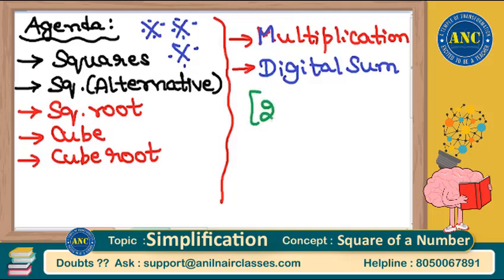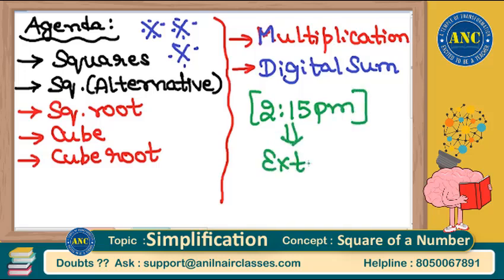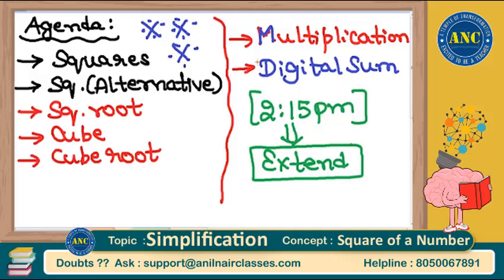The target is to complete everything in the next two and a half hours till 2:15 pm. If required, we might extend the class. It is completely up to you whether to listen to this class or ignore it — I do not force any student. Interested will sit, not interested will leave. Now, we will start with a very preliminary operation called squares.